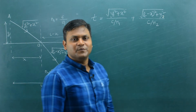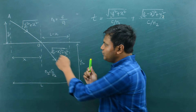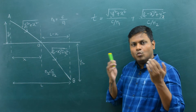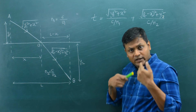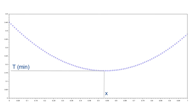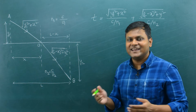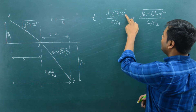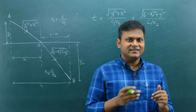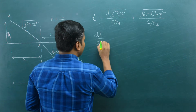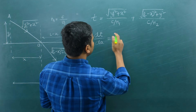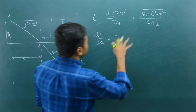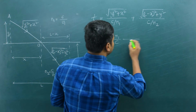Using this expression, we want to find the point O corresponding to the minimum time. One approach is to shift O left or right, calculate times for many paths, and find the x giving minimum time. Alternatively, we use an analytical approach: find the value of x for which the derivative of time with respect to x equals zero. So we set dT/dx = 0 and proceed to compute the derivative.